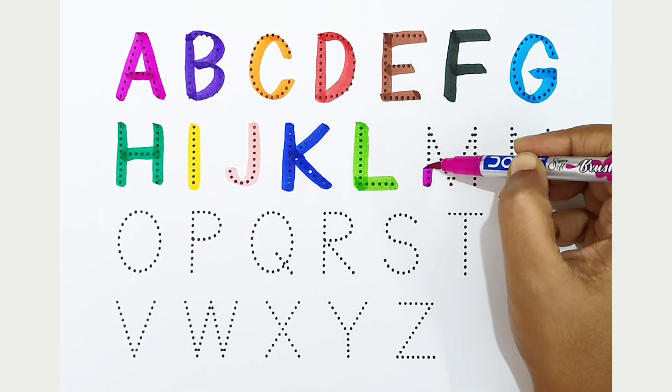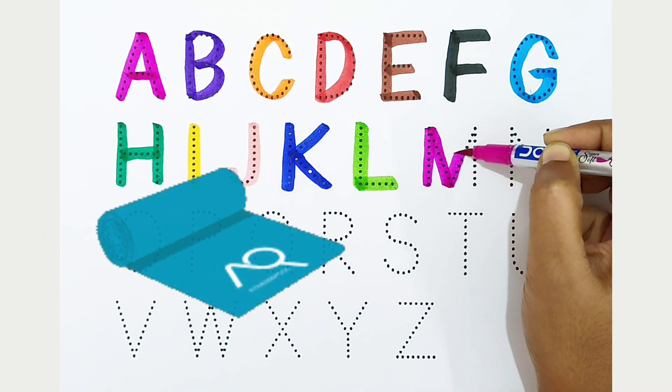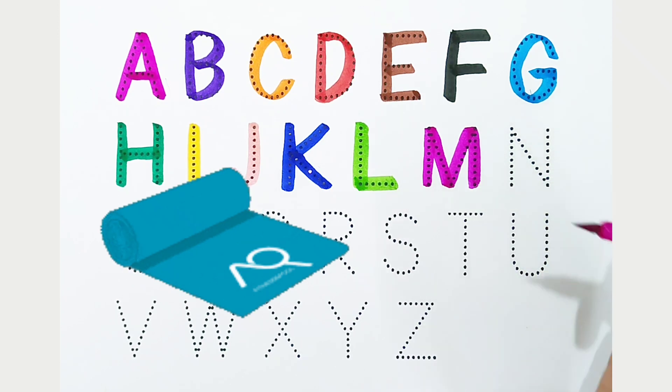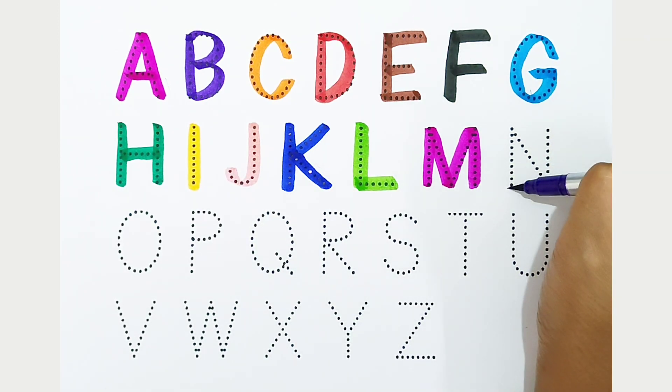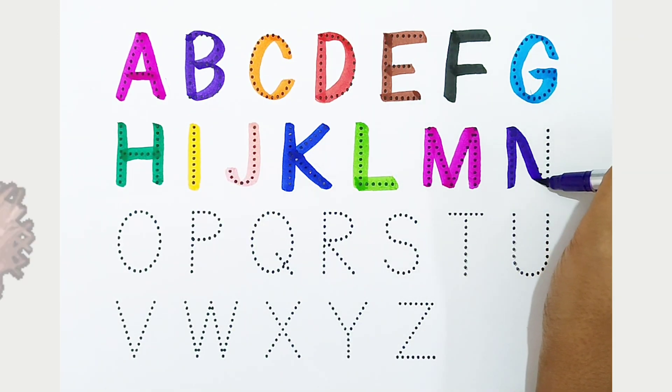M, dark pink color. M is for mat. N, violet color. N is for nest.